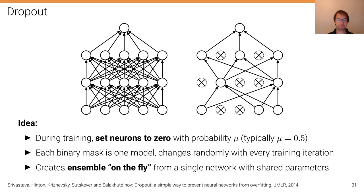So effectively what this does is it creates an ensemble on the fly from a single network with shared parameters. Before in the classical ensemble methods the parameters were not shared, but here the parameters stay the same—it's just that in some cases a neuron with its parameters participates in training and in some iterations it doesn't participate.